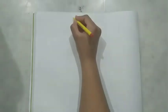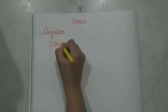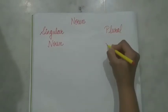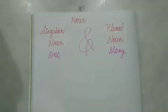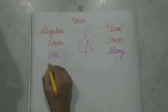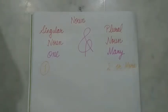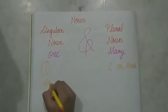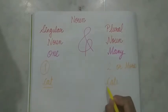Today we are going to start with the next part of noun — singular noun and plural noun. In other words we also call it one and many. So what are singular nouns? Nouns that are one in number. And plural nouns are the ones that are two or more in number. For example, cat is one — cat is a singular noun — whereas cats are many — cats is a plural noun.